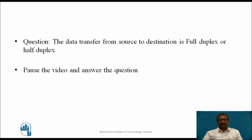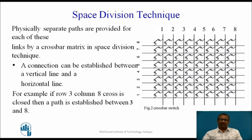Now let us have a question. The data transfer from source to destination — is it full duplex or half duplex? You pause the video and answer the question. You might have answered the question. The answer is: in a circuit switch network, the data transfer takes place between source and destination in full duplex form.